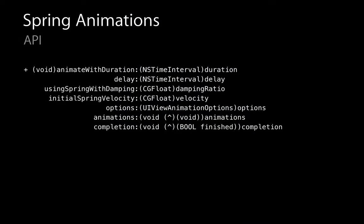What does the API look like? There's a single method on UIView that makes spring animations straightforward. Many parameters look familiar, but the two unique to spring animations are damping and initial spring velocity. Damping takes a value from zero to one and controls how much resistance the spring has at the end. The initial spring velocity gives the animation a kick to push the object into the animation curve, and can also synchronize the animation with something already in flight.